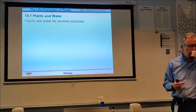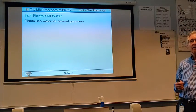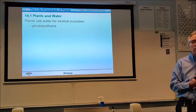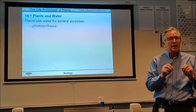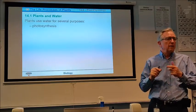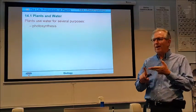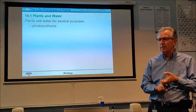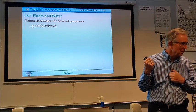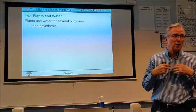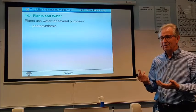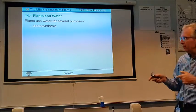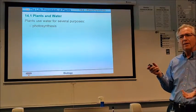So the first thing it talks about in the chapter is the plant needs water. What does it need water for? The first thing we're going to talk about is photosynthesis. What are the raw materials for photosynthesis? Obviously one of them is water, and the other one is carbon dioxide. So carbon dioxide and water are the two raw materials that plants need to carry on photosynthesis.